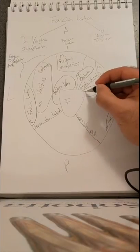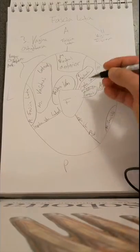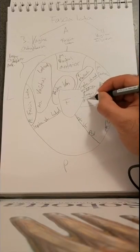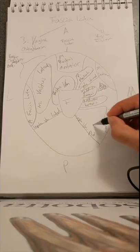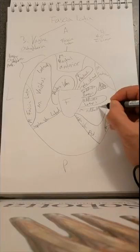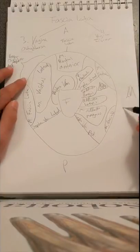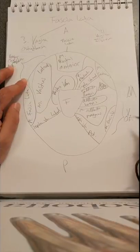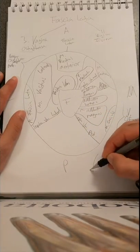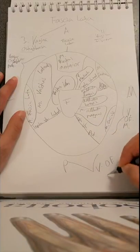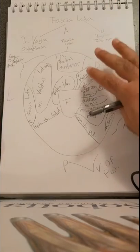The medial compartment contains the muscles of adduction: musculus adductor longus, musculus adductor brevis, and musculus adductor magnus. This compartment is called the vagina osteofibrosa medialis. The last compartment is the vagina osteofibrosa posterior.